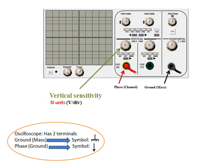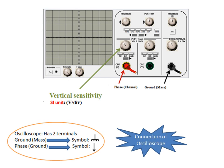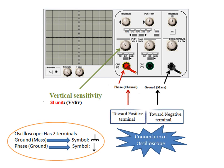Let's focus now on the connection of the oscilloscope. The phase terminal, or channel, must be connected toward the positive terminal, while ground or mass must be connected toward the negative terminal.